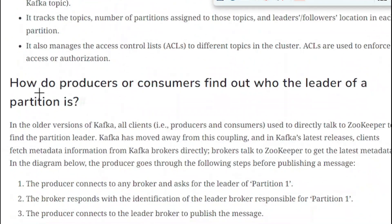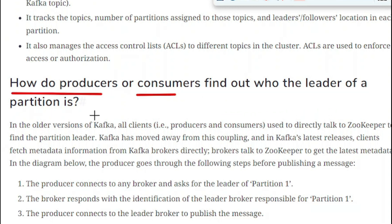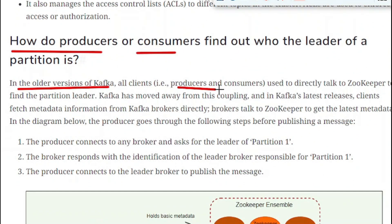Now let us see how producers or consumers find out who the leader of a partition is. As you know, topics are broken down into smaller fragments called partitions, and each partition has a leader along with some followers. In the older version of Kafka, all clients — such as producers or consumers — used to directly talk to ZooKeeper to find the partition leader.